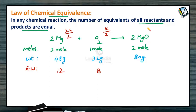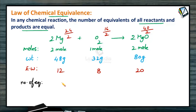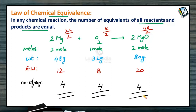For magnesium oxide, the formula mass is 40 divided by the total charge of 2, giving an equivalent mass of 20. The number of equivalents equals given mass divided by equivalent mass: 48 ÷ 12 = 4, 32 ÷ 8 = 4, and 80 ÷ 20 = 4. So in any chemical reaction, the number of equivalents of all reactants and products are always the same. This is a very important concept you will use under the chapter Redox Reactions for higher-level objectives.